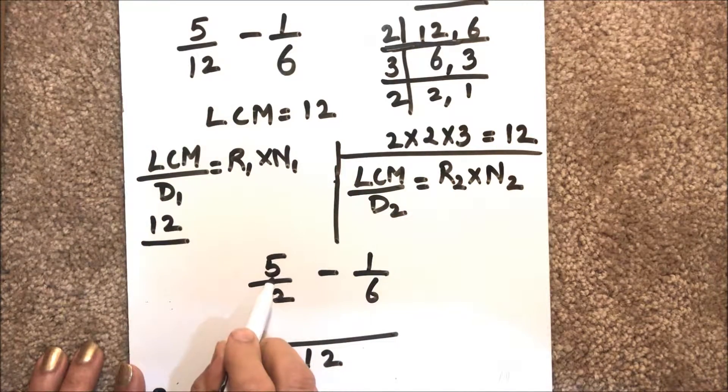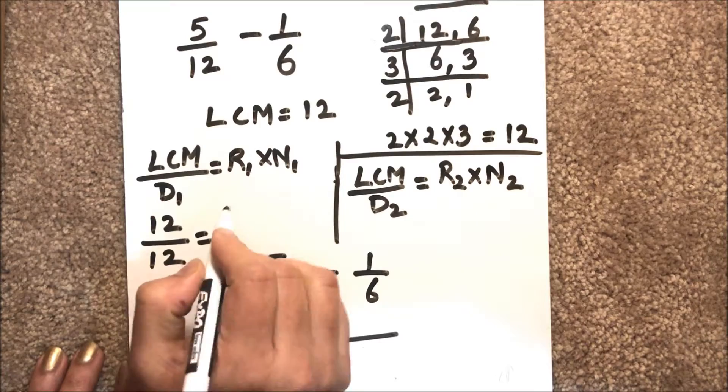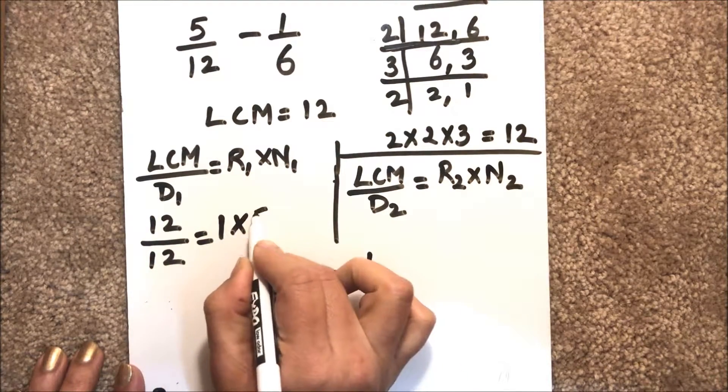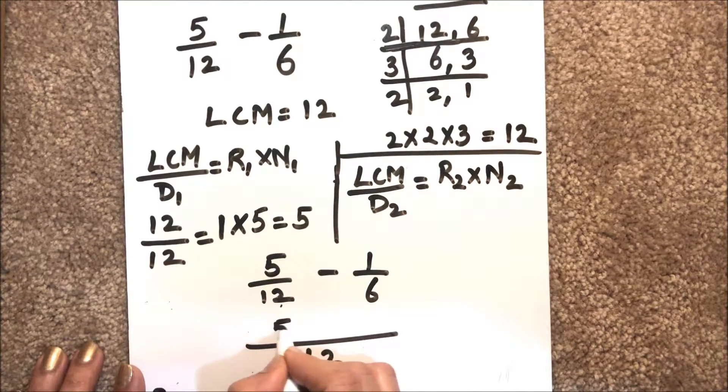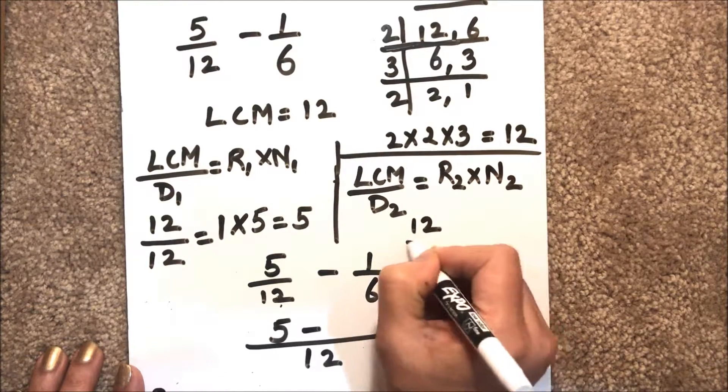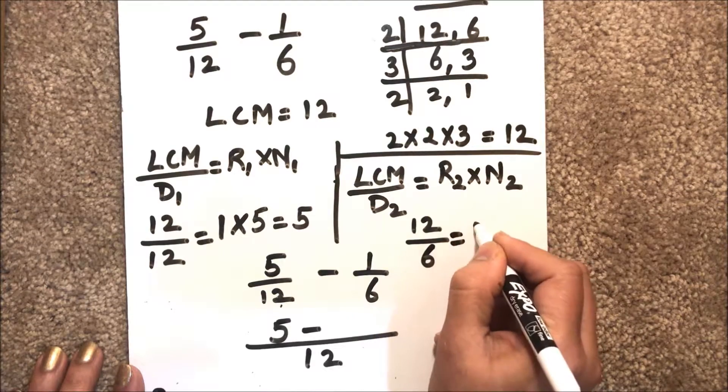So we'll get the result as 1, and numerator 1 is 5, so we get the number 5. We'll write the number 5 here. Now for the second one, we have LCM as 12, denominator is 6, so the resultant is 2, and the numerator is 1, so the final result is 2. We'll write 2 here.